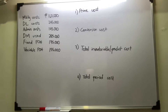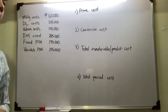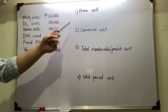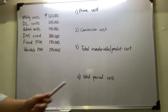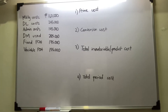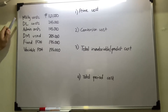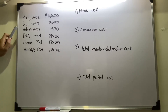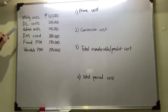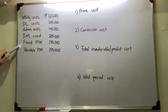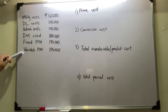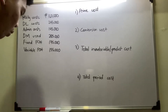So now we have an exercise. We want to determine how to obtain the prime costs, conversion cost, how to determine the total inventory or product cost, as well as what are the components of period cost. The problem states that you have a marketing cost of 160,000 pesos, direct labor cost of 245,000, administrative costs of 145,000, direct materials used 285,000, fixed factory overhead 175,000, and variable factory overhead of 455,000.